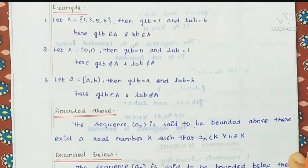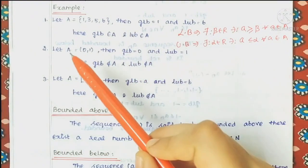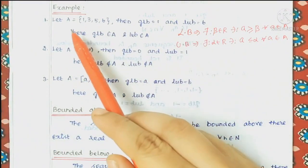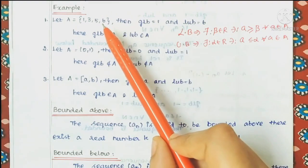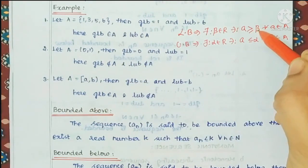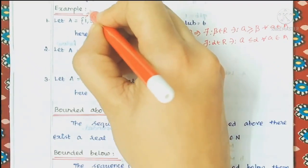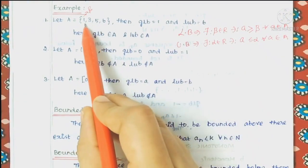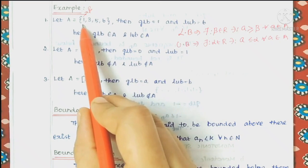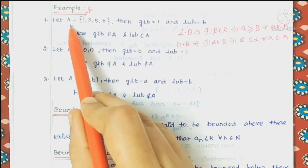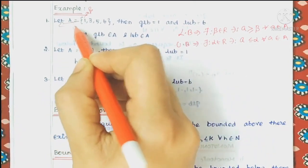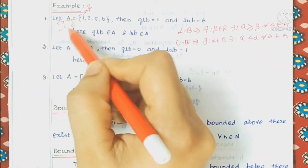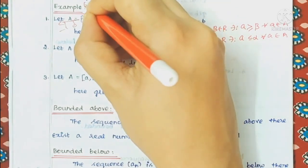Let's see the greatest lower bound and least upper bound with examples. First example: the set is {1, 3, 5, 6}. The lower bound definition means a is greater than or equal to beta. Since 3, 5, and 6 are all greater than 1, the lower bound is 1. If you try 0 or minus 1, they are also lower bounds but less than 1. So 1 is the greatest lower bound.